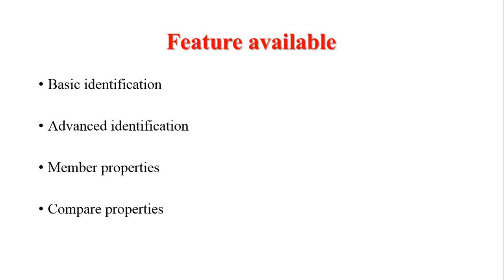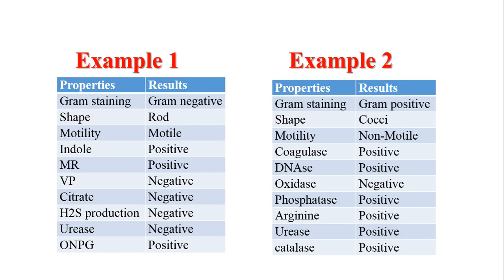The features available include: basic identification, where you fill in biochemical and microscopic examination information and get a list of possible organisms; and advanced identification, where you can fill in more results with a higher number of biochemical and microscopic test options. There is also a member property option where you can search for properties of a known bacterium, such as E. coli. Finally, you can compare the properties of two members, for example comparing Salmonella and Shigella.